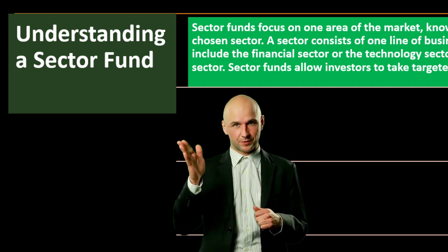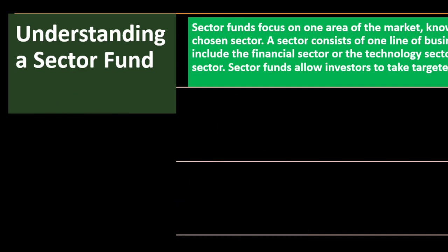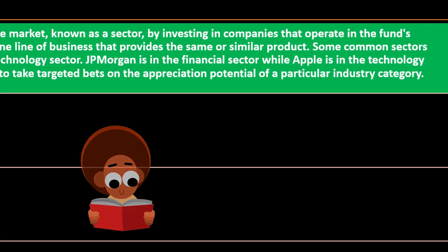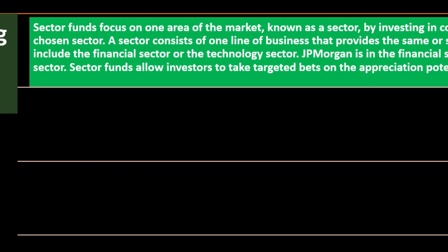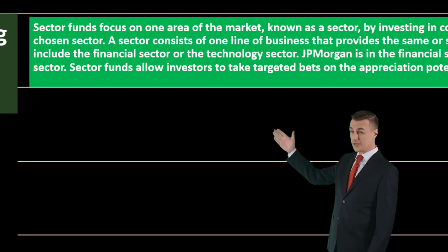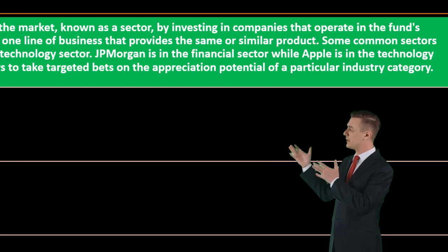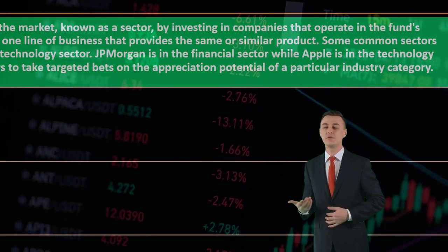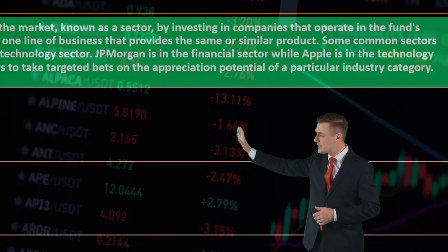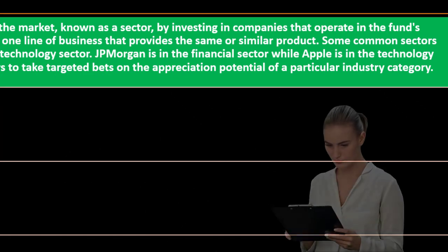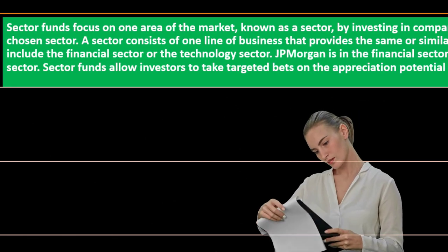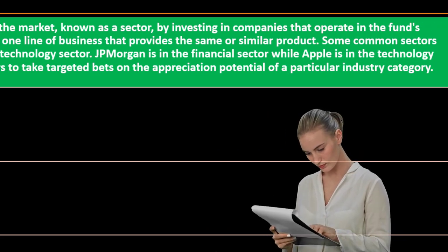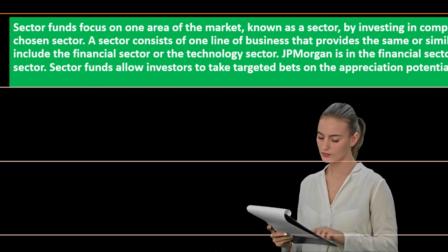Sector funds focus on one area of the market known as a sector, by investing in companies operating in the fund's chosen sector. A sector consists of one line of business providing the same or similar products — grouping the stock market's companies into different categories. Some common sectors include the financial sector and the technology sector. For example, JP Morgan is in the financial sector while Apple is in the technology sector.